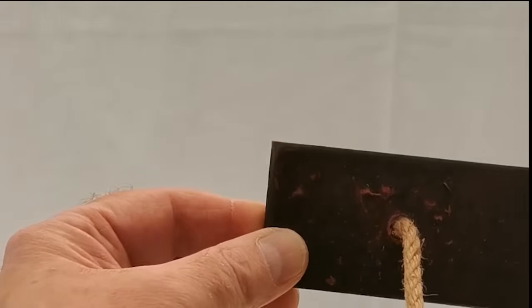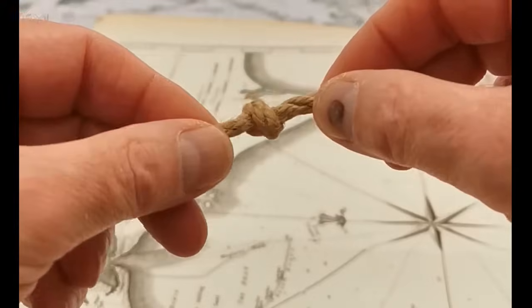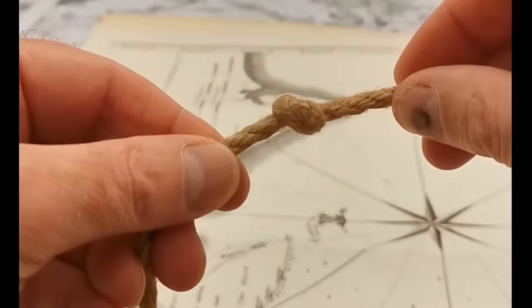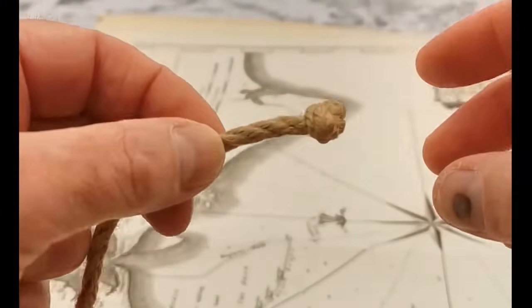We can then turn left or right and head home. You would find several knots on the string of a Kamal. This is because you would travel to and from different places.